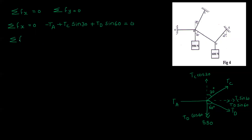Sum of Fy is equal to 0. TC cos 30 is equal to 0.